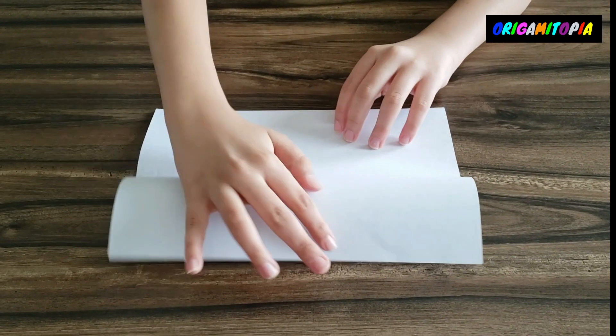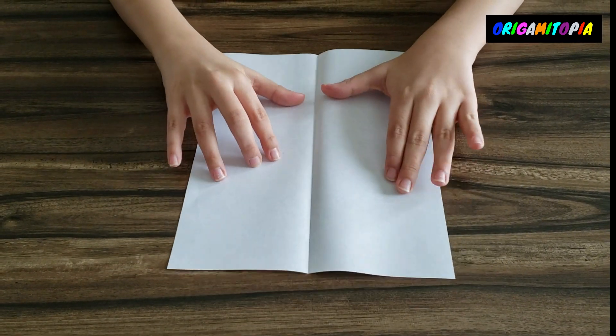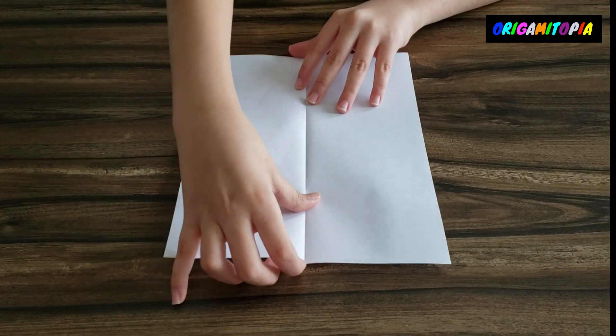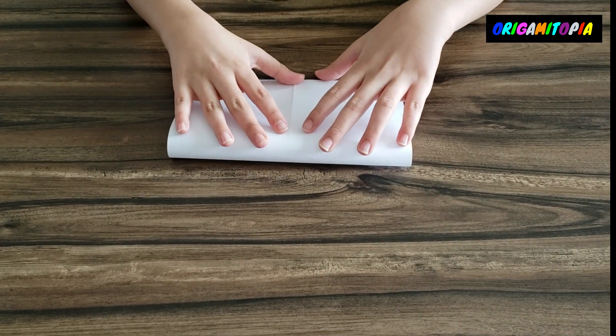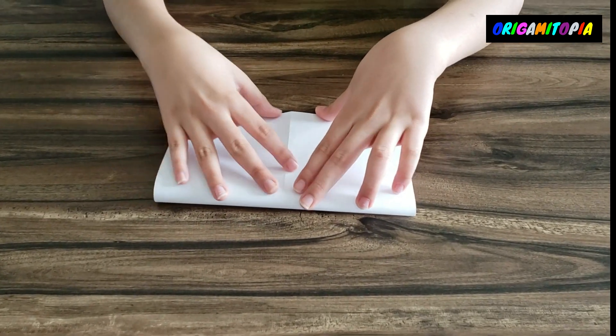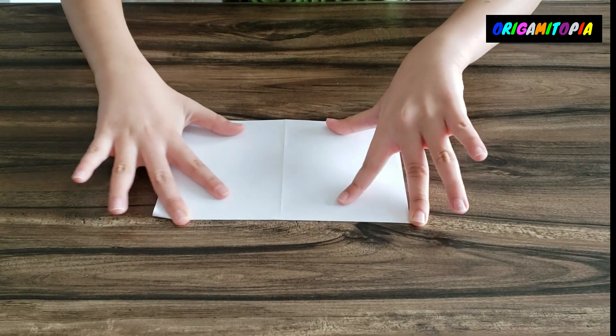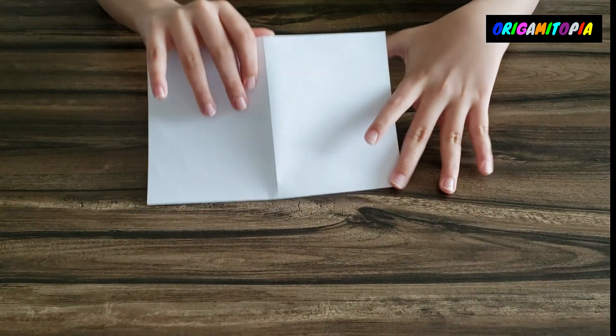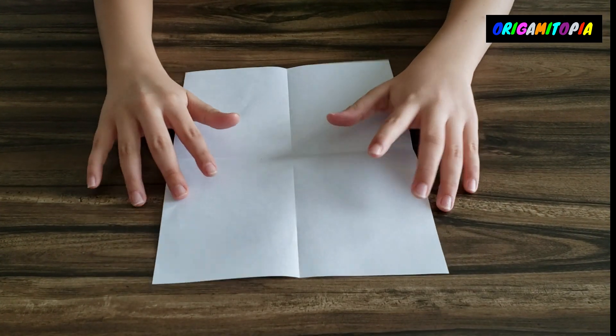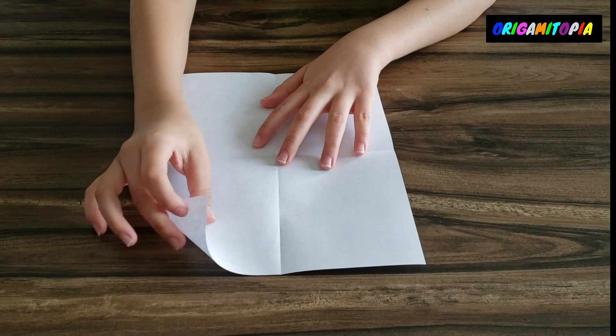Now open the paper up and rotate it this way and fold it in half down to here. And then open the paper up again. Now you're going to take these two top corners.